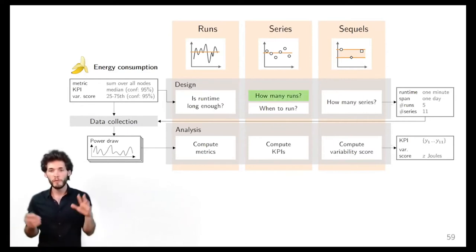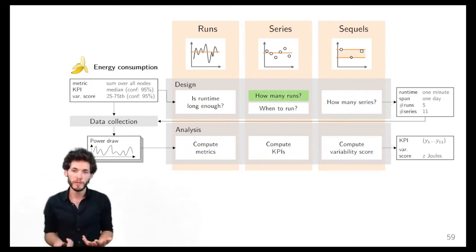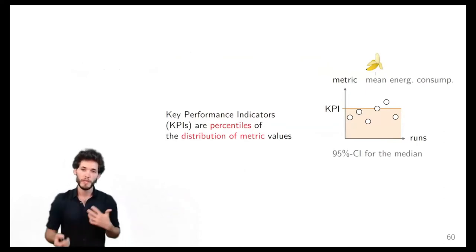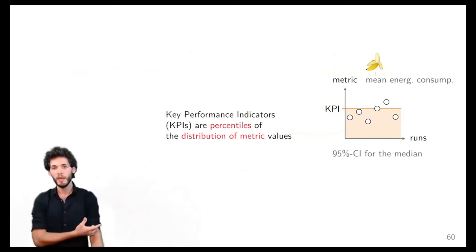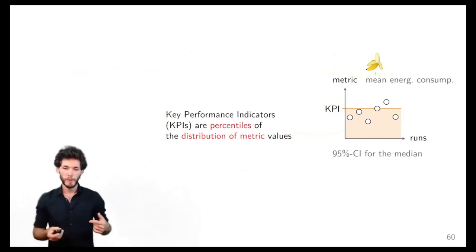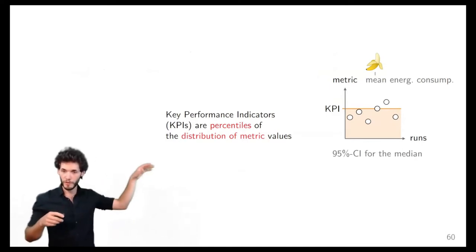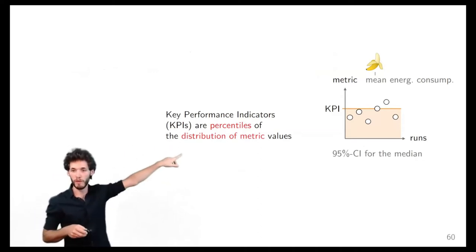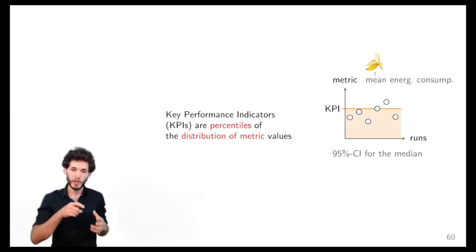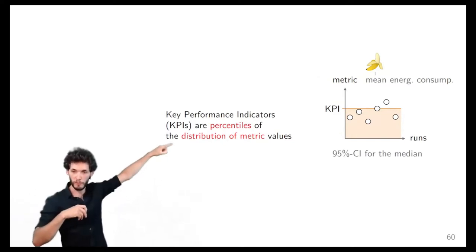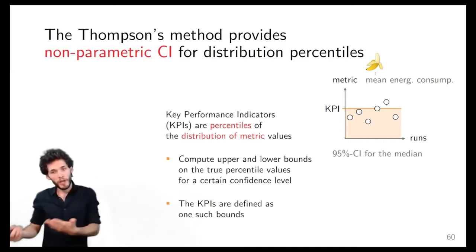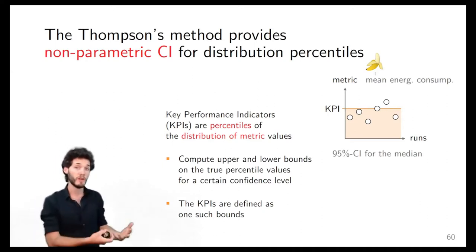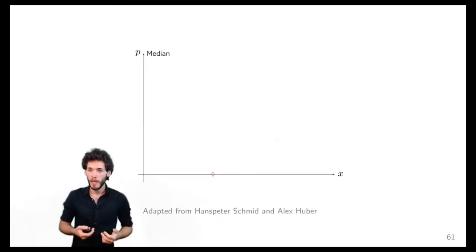Let's start with the very first question: how many runs should we pick? In TriScale we define KPIs as the percentiles of the distribution of our metric. Remember: we measure energy consumption, we compute a metric, and we get one value per run. What we choose is to estimate a percentile of this distribution of metric values. The good news is we choose percentiles because there exists a non-parametric way of computing confidence intervals for percentiles, and it's surprisingly easy.